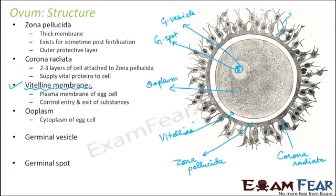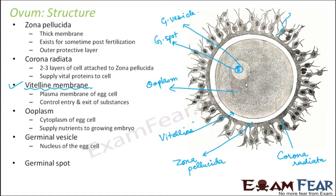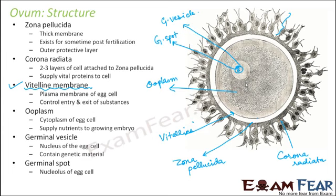Ooplasm is the cytoplasm of the egg cell, and it supplies nutrients to the growing embryo. Because the fertilized egg will develop into a zygote, and the embryo developing inside will need nutrients provided by the ooplasm. Germinal vesicle is the nucleus of the egg cell and contains the genetic material — similar to how the sperm head contains the nucleus with genetic material. Germinal spot is nothing but the nucleolus of the egg cell.